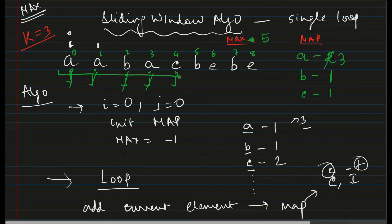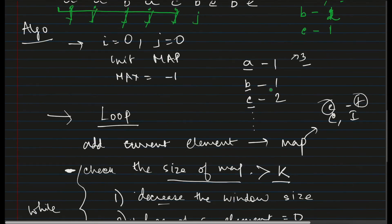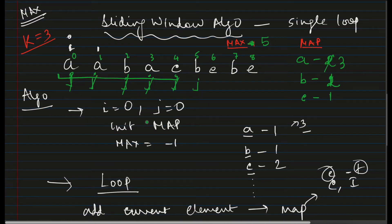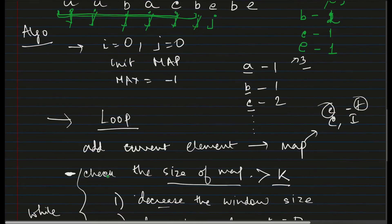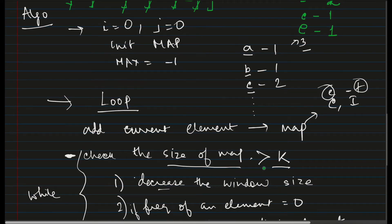j moves forward and we encounter 'b' — its frequency is updated; the map size is still equal to k. The window is now larger and max becomes 6: a, a, b, a, c, b. j moves forward again and we encounter 'e', a new element. 'e' is added with frequency 1, making the map size 4, which is greater than k. This is when we start reducing the window.